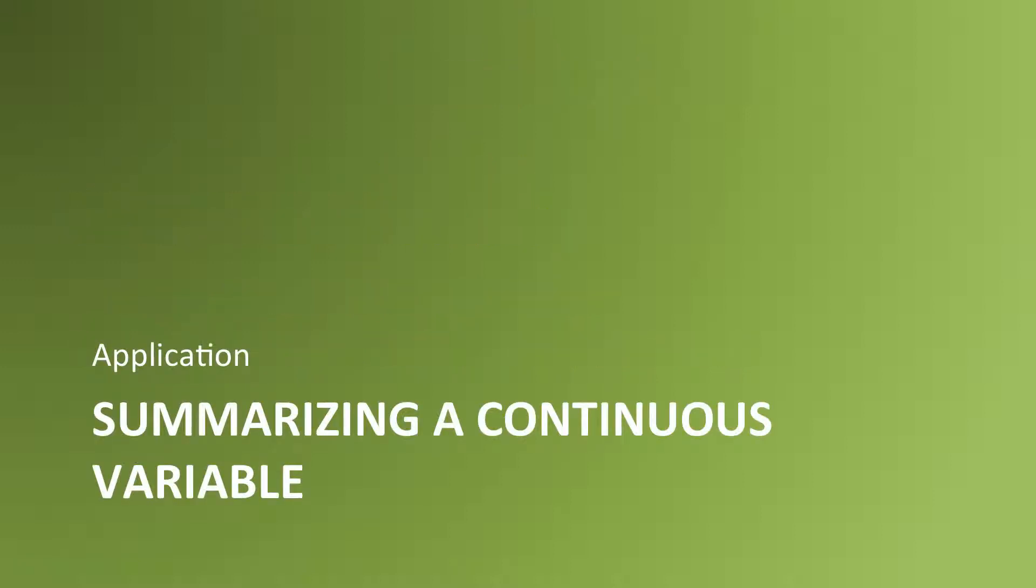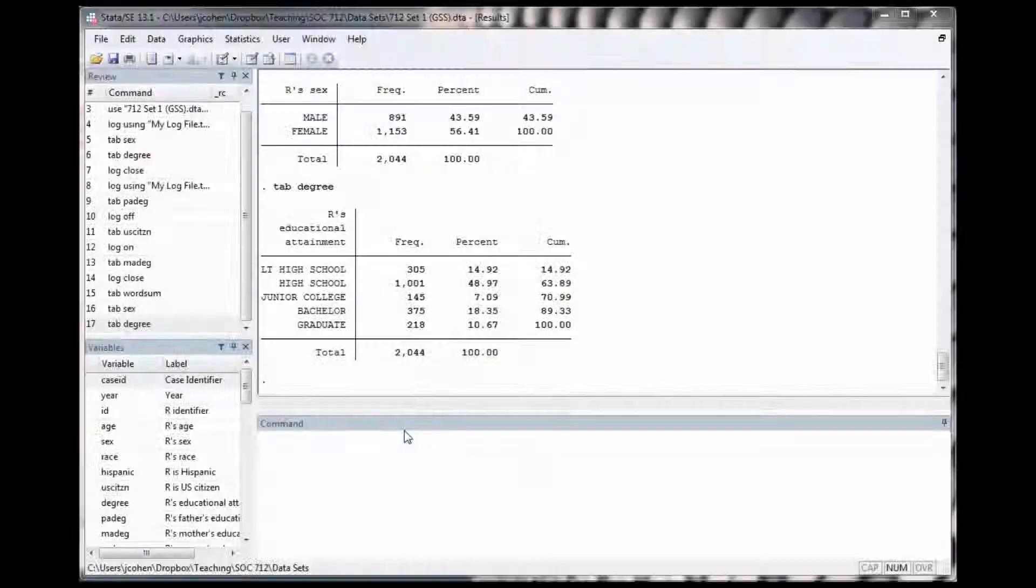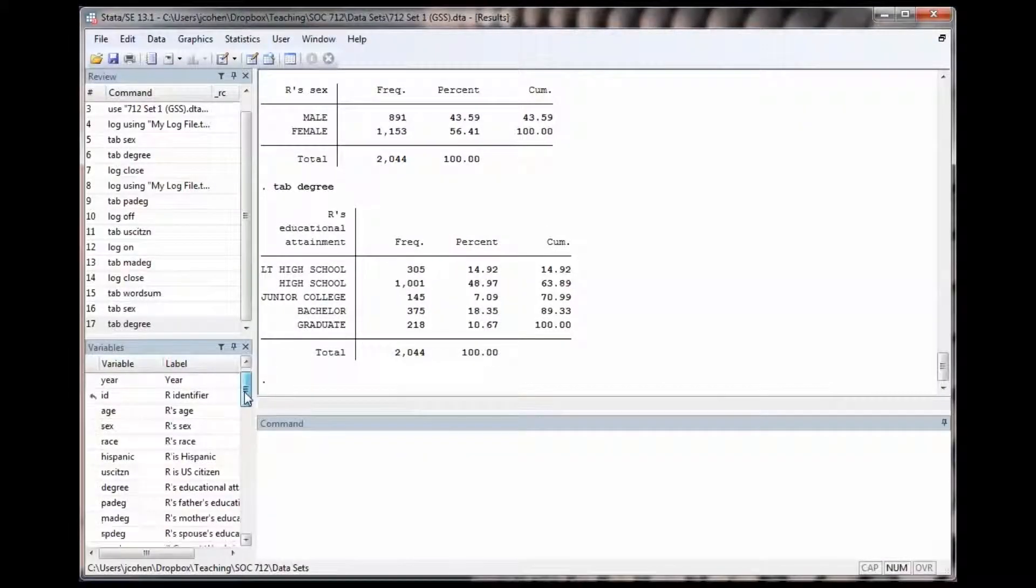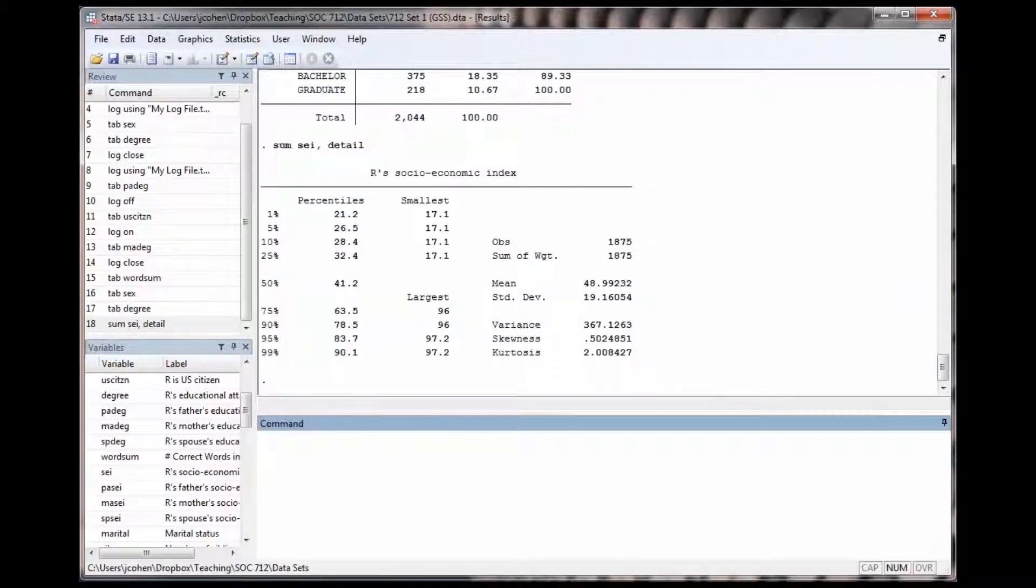Let's see what it looks like to use the sum command in a real Stata session. I'm going to summarize the SEI variable, which shows people's socioeconomic index score on a scale of zero to one hundred. I type sum SEI comma detail. That's the mean of the sample and the standard deviation. This part gives us the different scores at the sample's percentiles. The median is 41.2. 28.4 is the tenth percentile score. 78.5 is the ninetieth.